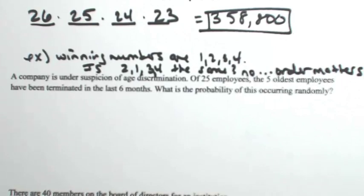In this next example, we have a company that is under suspicion of age discrimination. Of 25 employees, the five oldest employees have been terminated in the last six months. What is the probability of this occurring randomly?